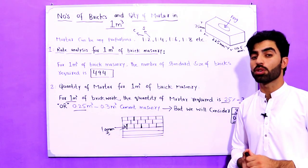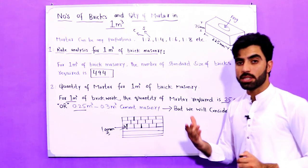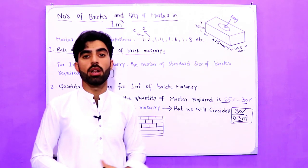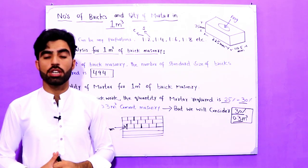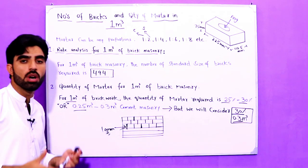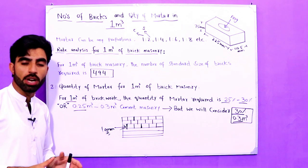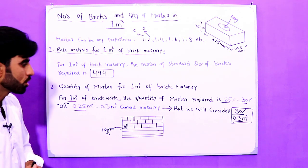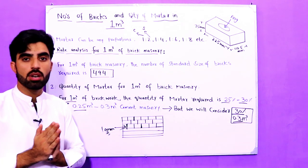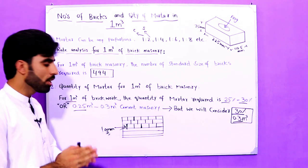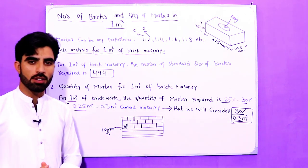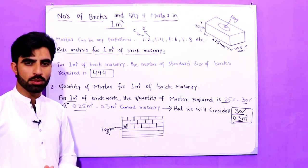From that mortar you can easily find the quantity of cement and sand. This is a short but very helpful video covering how many bricks are required for 1 meter cube, the quantity of mortar for 1 meter cube, and the 10 millimeter joint size used in brick masonry layers. If you have any questions, comment below and I will try to reply. Thanks for watching — see you in the next video, goodbye.